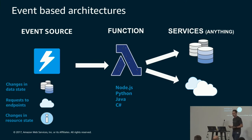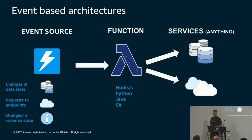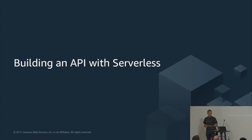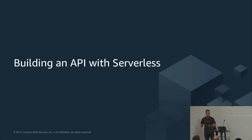In AWS, you can trigger a Lambda function off a load of different event sources: a HTTP request coming in, something getting uploaded to S3, or a row changing in a DynamoDB table. Then you run your logic in Lambda, and from your Lambda function you can use AWS SDKs, contact third parties, and put your business logic in there. That's the high-level baseline on serverless — we're going to dive in now and talk about how to build an API with serverless.